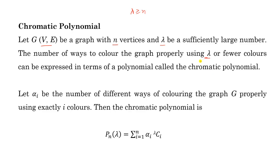Now how can we find the chromatic polynomial for a given graph? Let alpha_i be the number of different ways of coloring the graph G properly using exactly i colors. Then the chromatic polynomial is given by this expression. Now how can we find this expression?